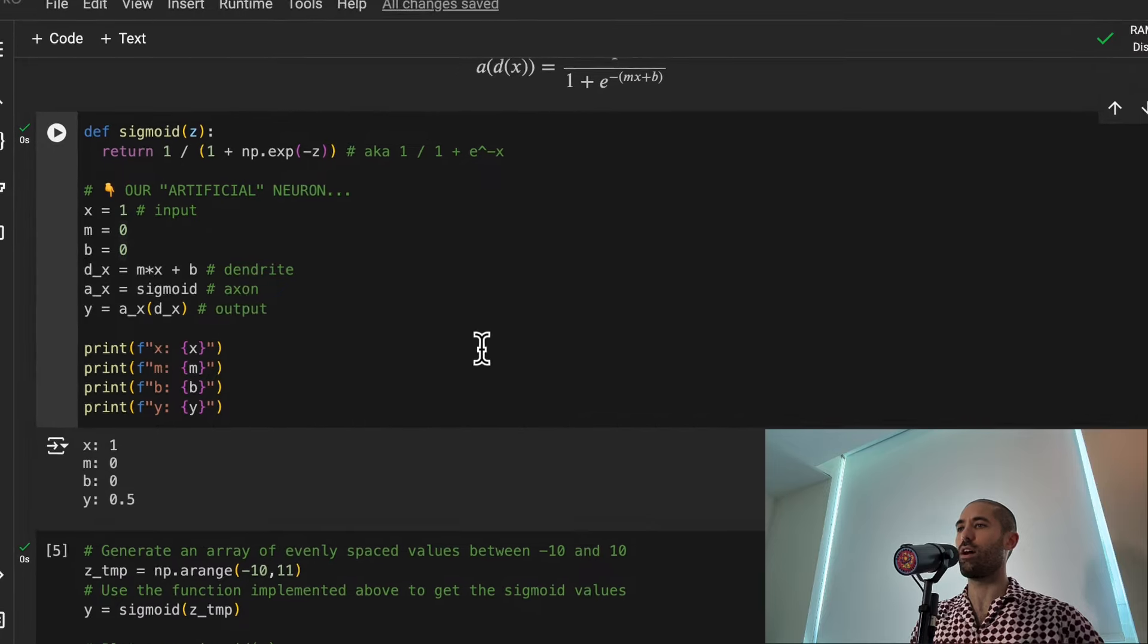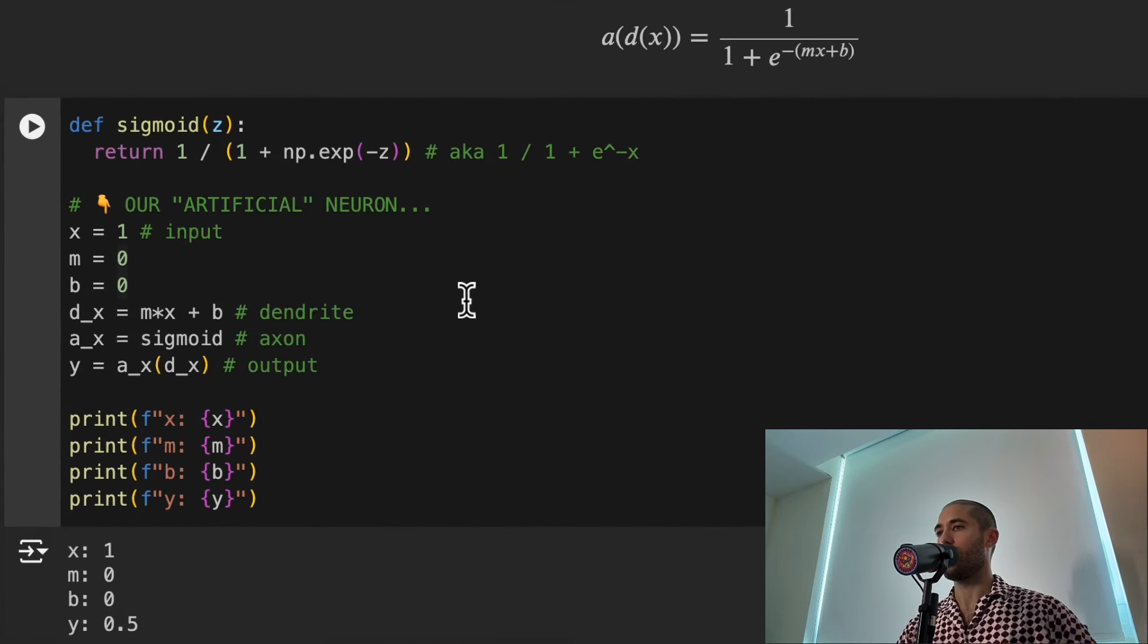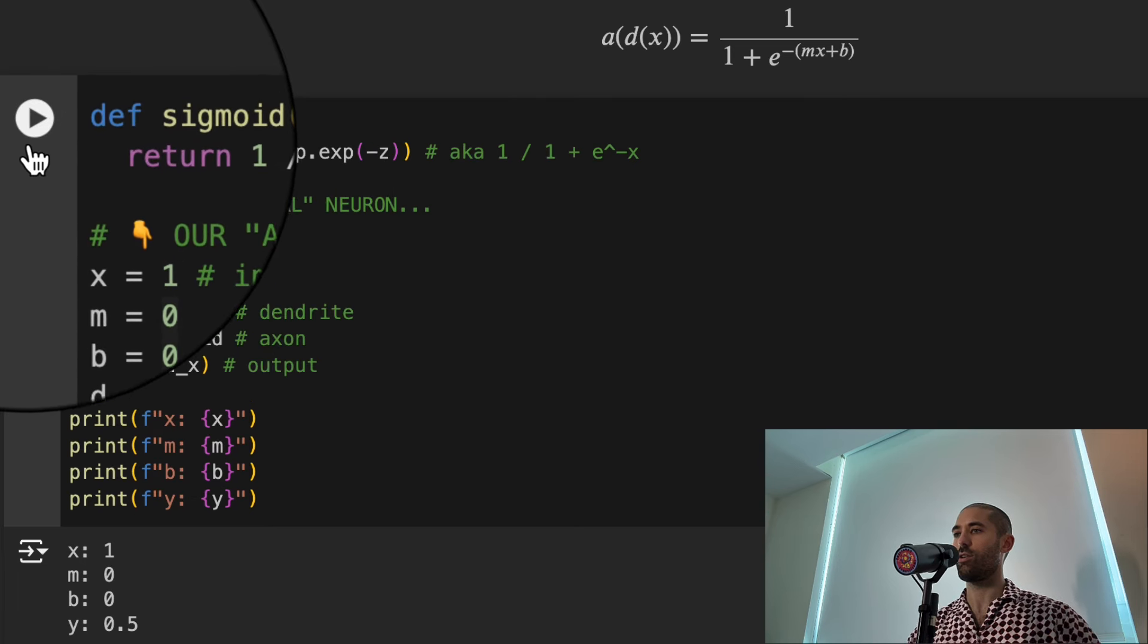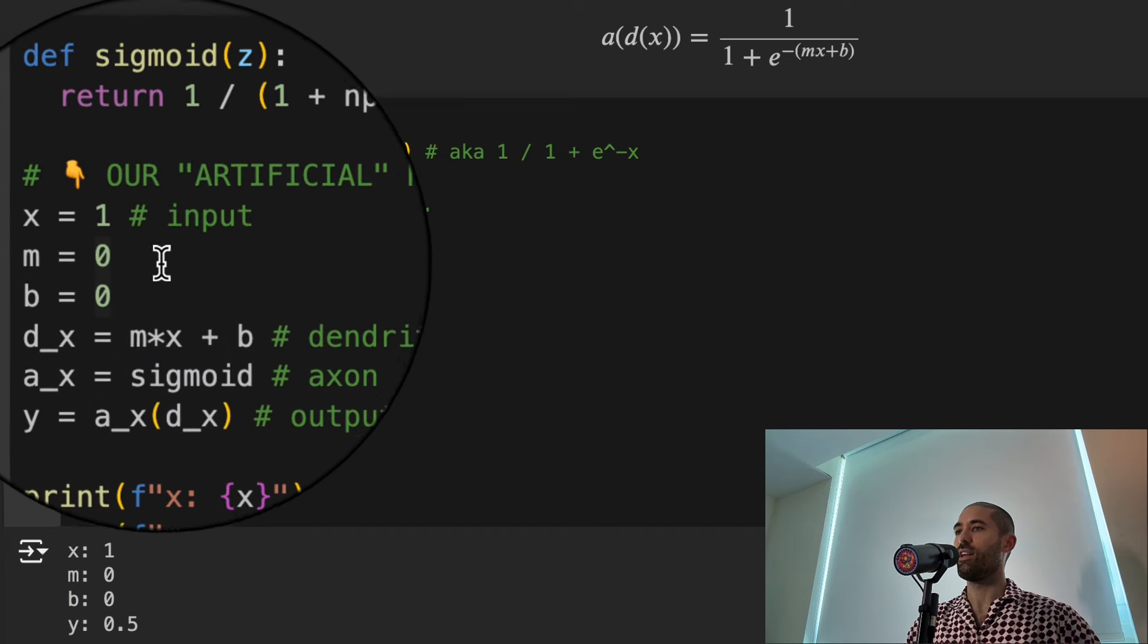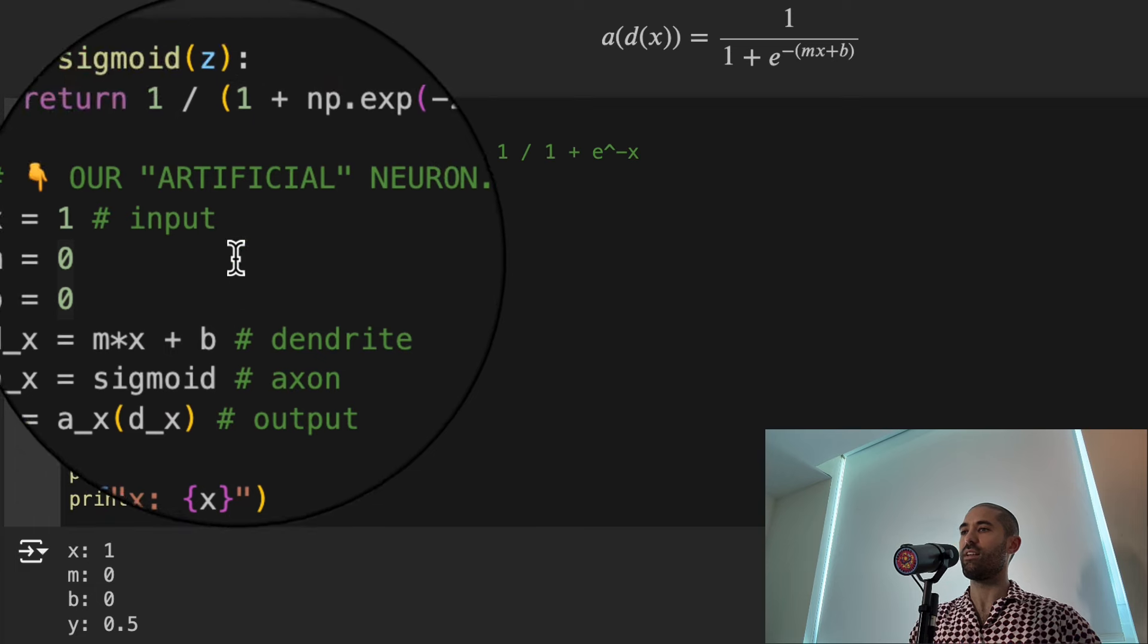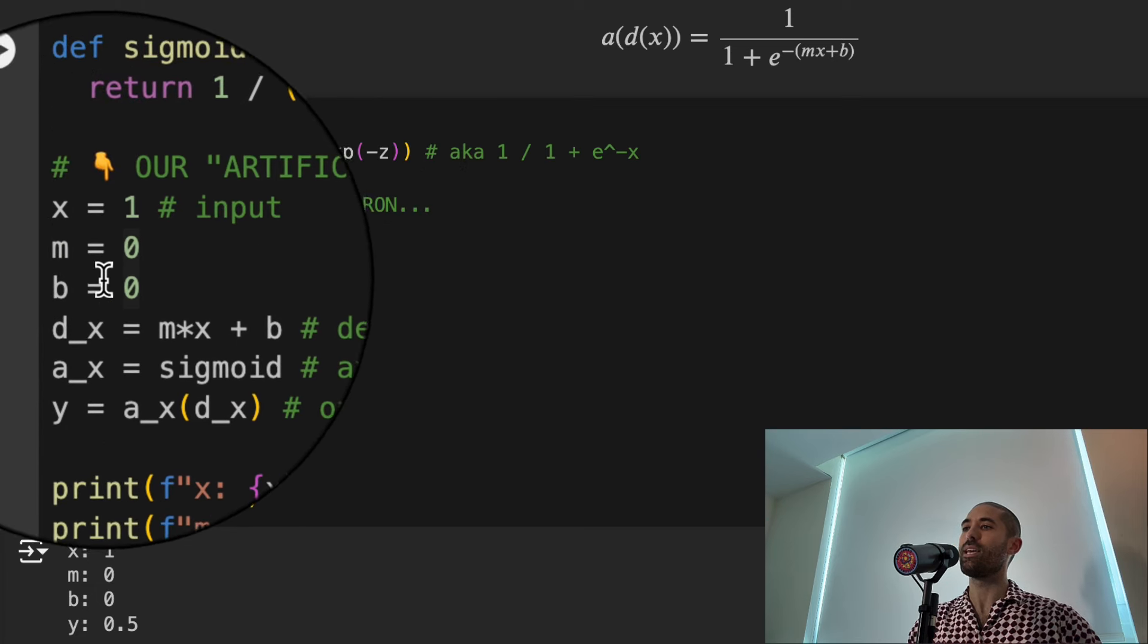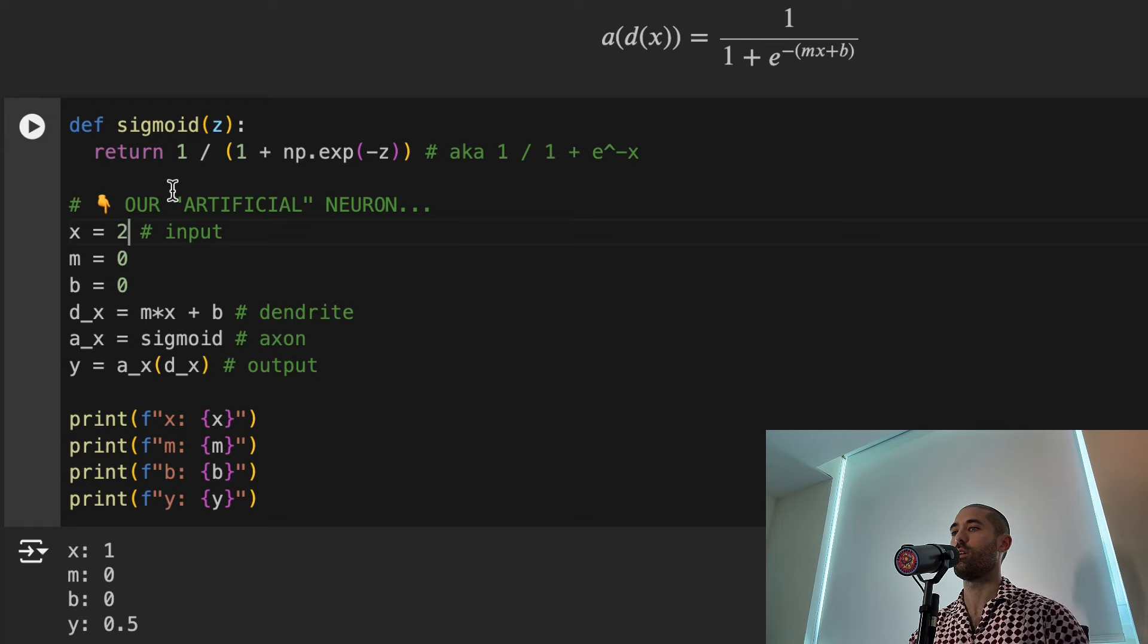Here in this block, we specified our artificial neuron. This is how we can use this neuron. We can send inputs into it or input signals into it by changing this number here. We can run our neuron or execute this code by pressing this play button. You can see that when we feed in a value of 1 into our neuron, the neuron spits out a value of 0.5. You can see I've initialized the values of M and B to be 0. In practical terms, what this means is that the neuron is very trigger happy. It's always firing regardless of the input. You can see if I change this input to be 2, it's still spitting out a value of 0.5.